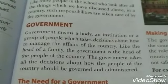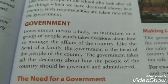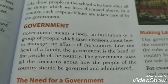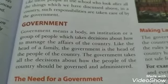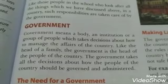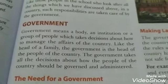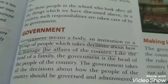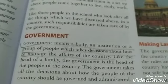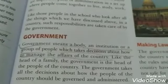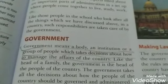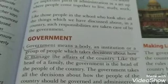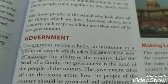Same way, अगर हम अपने families या अपने country पर यह बात लागू करें, तो वहाँ भी यही बात लागू होती है। Country को चलाने के लिए भी better administration system, rule and regulation, और other facilities होनी चाहिए। यह जो institutions provide करती है, उसको government कहा जाता है। Government means a body, institution, and a group of people which takes decisions about how to manage the affairs of the country।